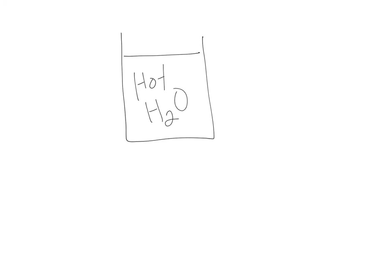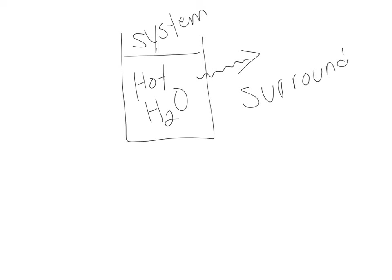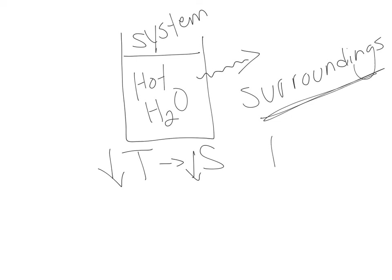What about the entropy of our surroundings? For instance, if you have a cup of hot water and it's not in an insulated cup, the heat is just going to leave your system — the hot water is considered your system — and go into the surroundings. A temperature change will affect the entropy: a decrease in temperature leads to a decrease in entropy of our system. But for our surroundings, an increase in temperature means an increase in the entropy of the surroundings.